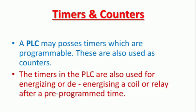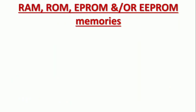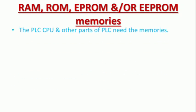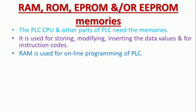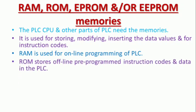This is the memory — RAM, ROM, EPROM, or EEPROM. The PLC CPU and other parts need memory. It is used for storing, modifying, and inserting data values for instruction code. RAM is used for online programming of PLC. The ROM stores offline pre-programmed instruction code data in the PLC. ROM is read-only memory, so you can store the program in the PLC.